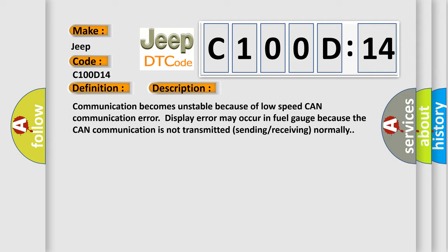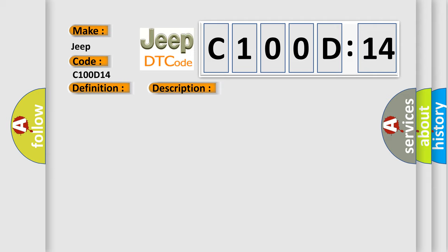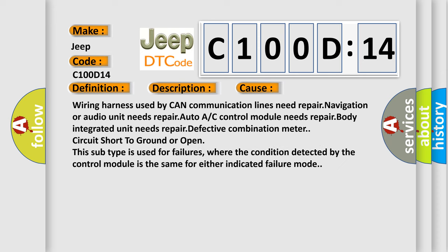This diagnostic error occurs most often in these cases: Wiring harness used by CAN communication lines need repair, navigation or audio unit needs repair, auto A/C control module needs repair, body integrated unit needs repair, defective combination meter, circuit short to ground or open. This subtype is used for failures where the condition detected by the control module is the same for either indicated failure mode.